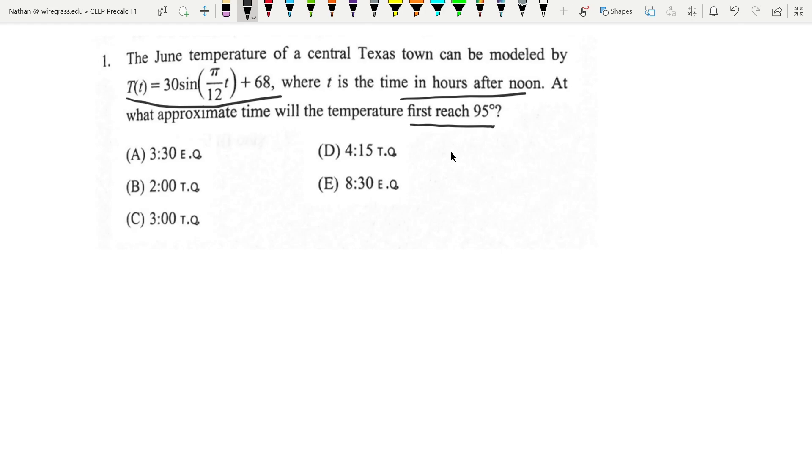There can be two temperatures where it's going to reach 95 degrees, so when the first one reaches, that's what we're looking for. But really, all we have to do here is plug 95 in for the temperature and then solve for T.